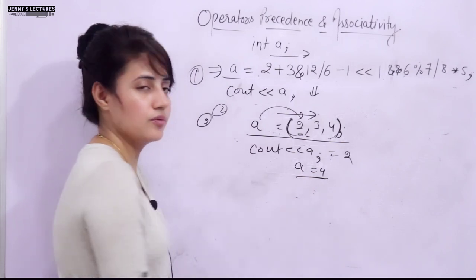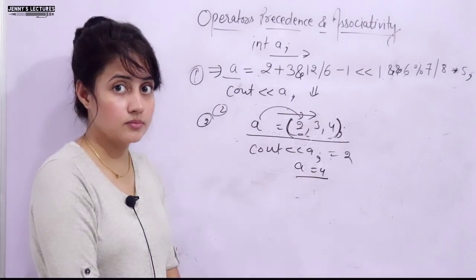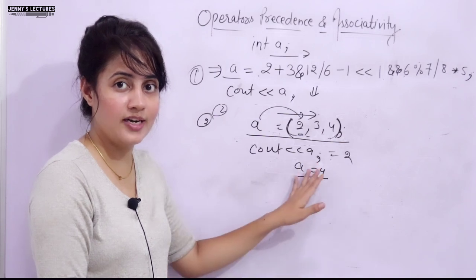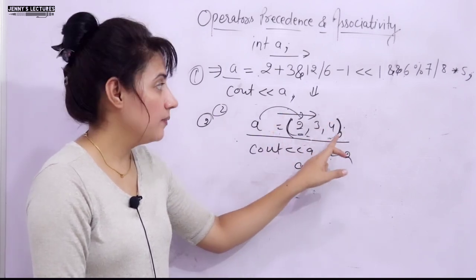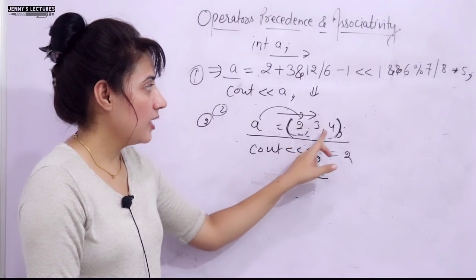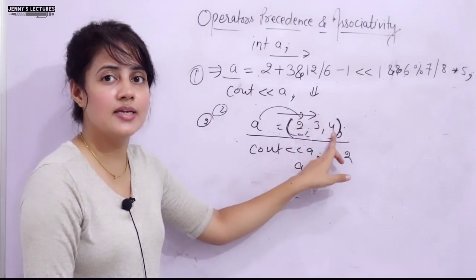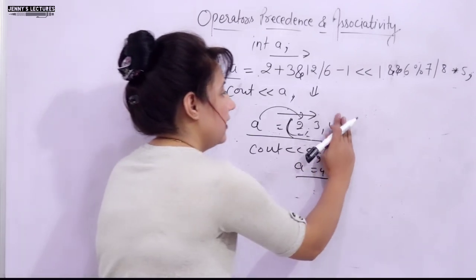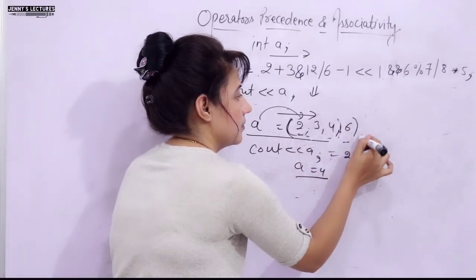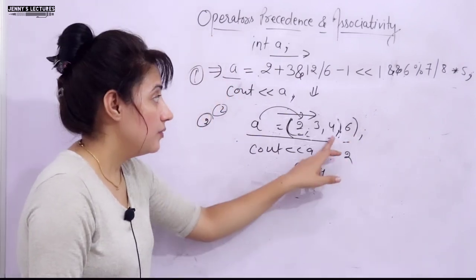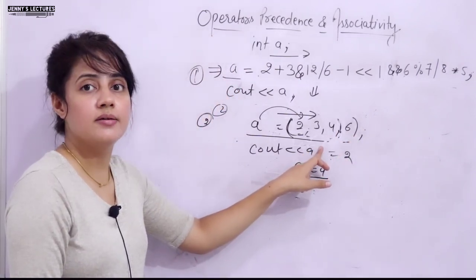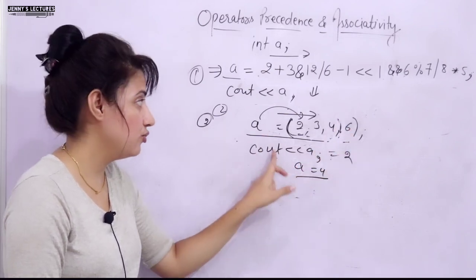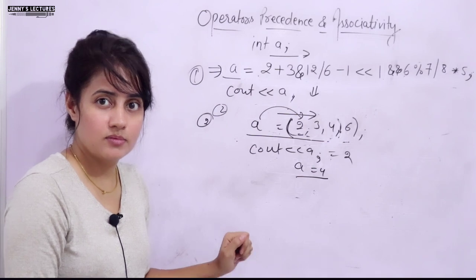When moving left to right with comma operators, each value is evaluated and discarded except the last one, which is returned. If we add another value — comma 6 — then 4 is also discarded and a becomes 6. So the comma operator always returns the last value.